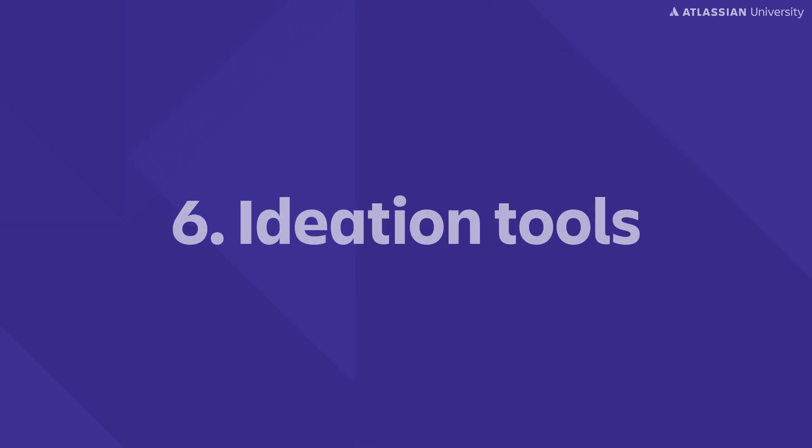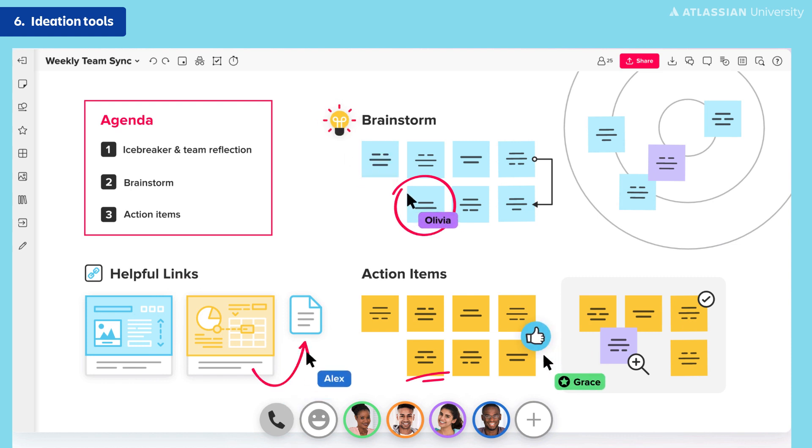Finally, let's talk ideation tools. Whiteboarding tools like Miro and Mural are great async collaboration tools we can bring into the ideation process — whether that's brainstorming, project planning, or decision making. Each of these represents an opportunity to collaborate with multiple people to come up with a decision or next step. These tools allow multiple people to join all at once or on their own from wherever they are in the world, adding thoughts and ideas, and ultimately staying aligned.